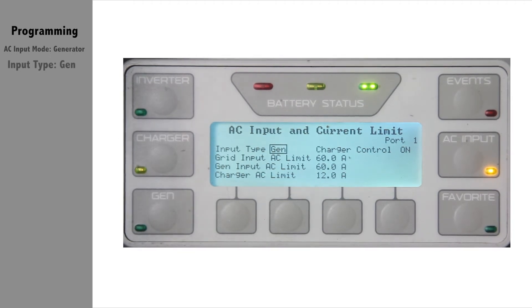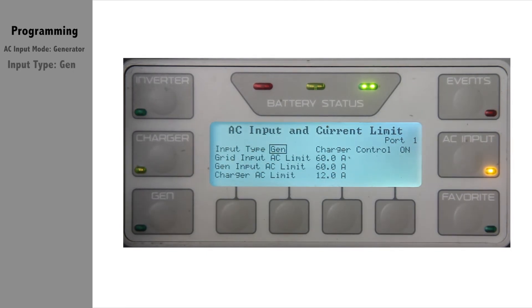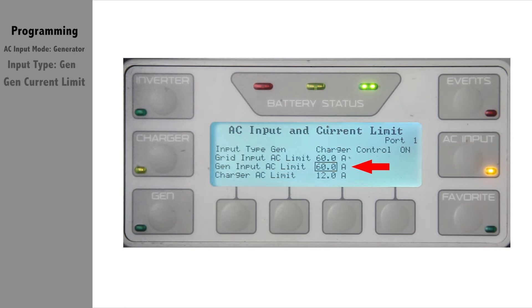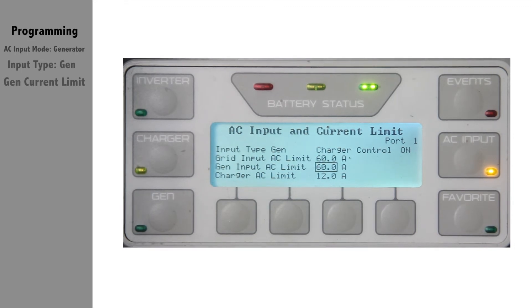If you are experiencing nuisance disconnects for overloading the generator, then you may need to reduce the amount of current you draw from it. From the same screen, scroll down to gen input AC limit and drop the current to the recommended settings from your generator manufacturer.